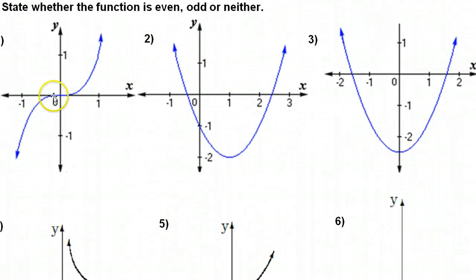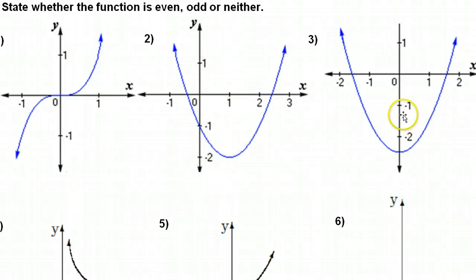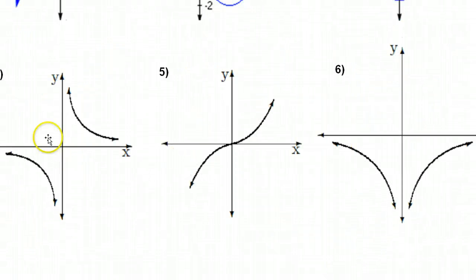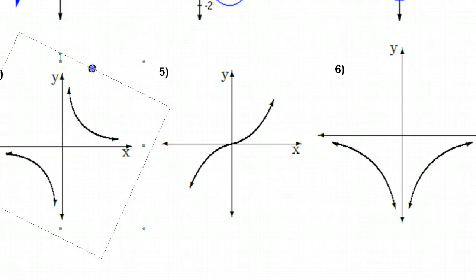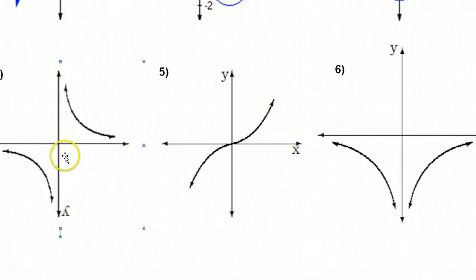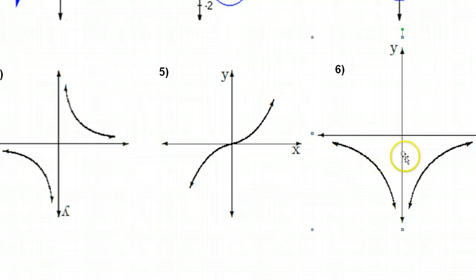So for example, this would be odd. This would be neither — it looks almost even, but it's not symmetric about the y-axis. This would be even — y-axis symmetry. This would be odd because it has rotational symmetry around the origin. See how it still looks the same? This would be odd. Same thing. And this would be even — the y-axis splits it right down the middle.